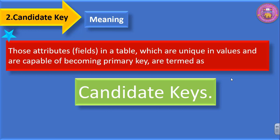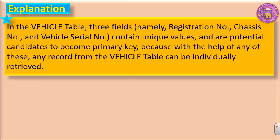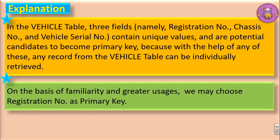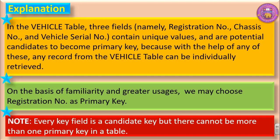All fields which are capable of becoming primary key are termed as candidate keys. In the vehicle table, registration number, chassis number, and vehicle serial number contain unique values and are potential candidates to become primary key, because any record from the vehicle table can be individually retrieved using any of them. On the basis of familiarity and greater usage, we may choose registration number as primary key. Note: every key field is a candidate key, but there cannot be more than one primary key in a table.